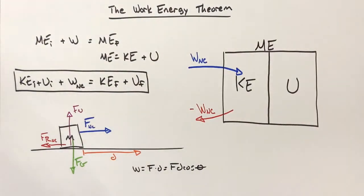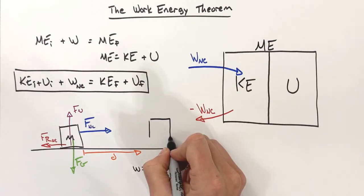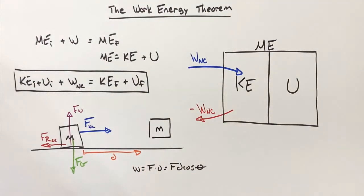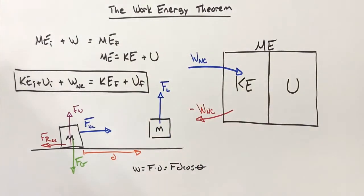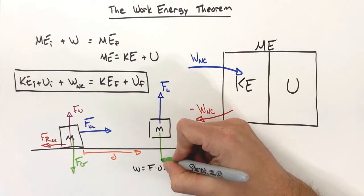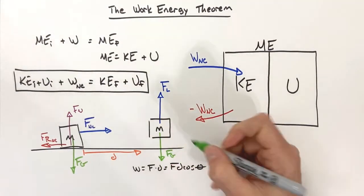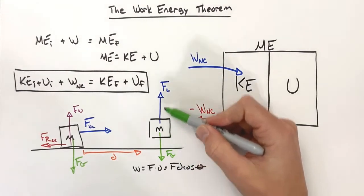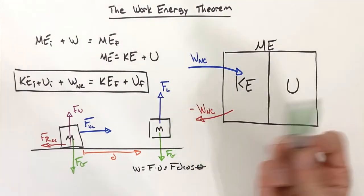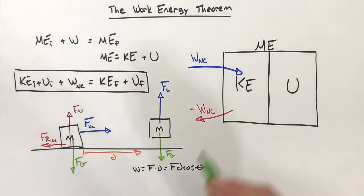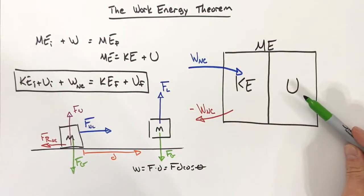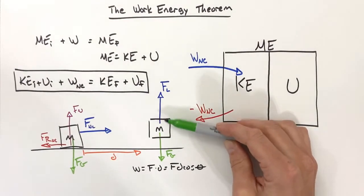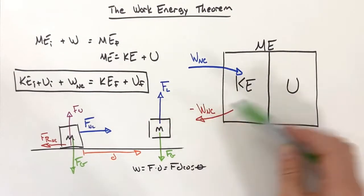Let's take a different situation: lifting a box upward. There's an upward lift force and gravity acting downward. By lifting up on the box, I'm not directly affecting its potential energy — even though you might think adding height means adding potential. Here's why: in the absence of gravity, if I pushed upward on a box far out in space where the net gravitational force was zero, the box would simply speed up — it would only gain kinetic energy.